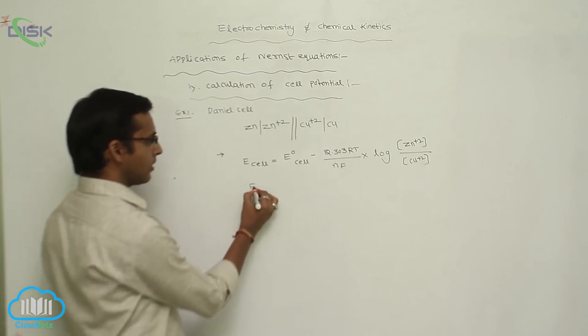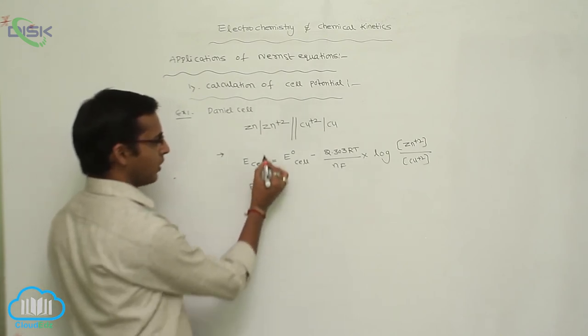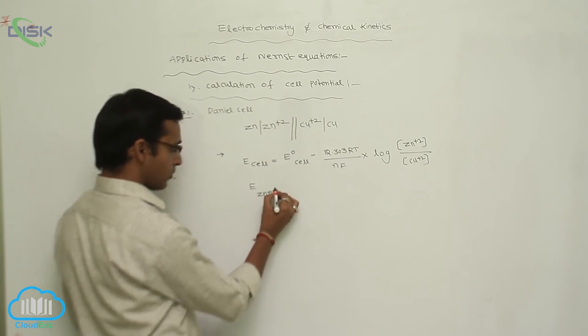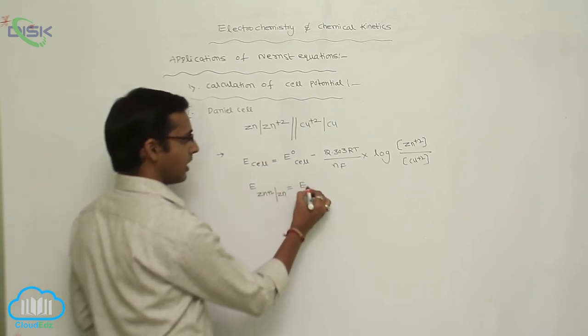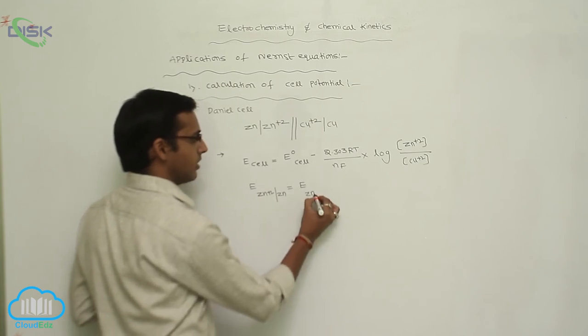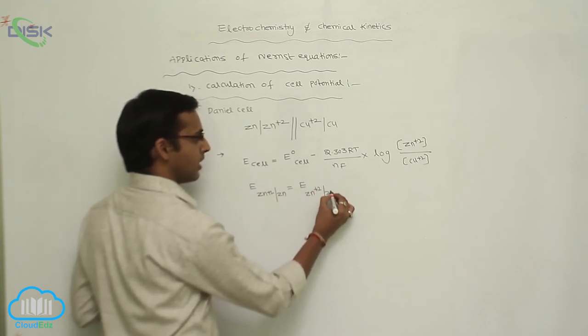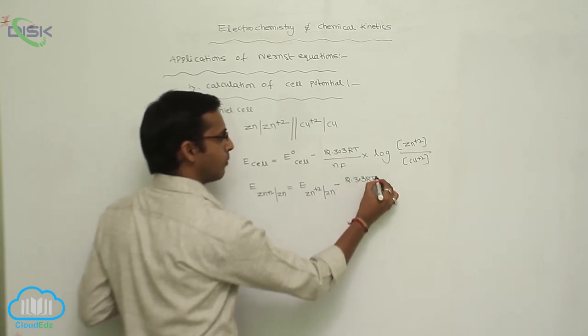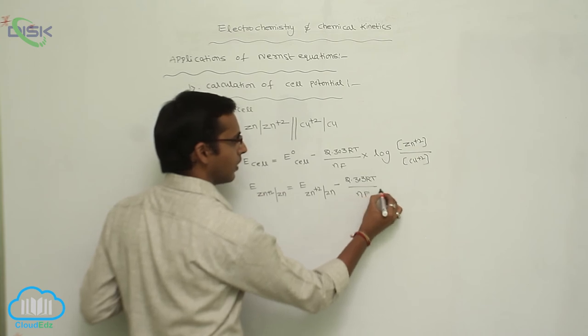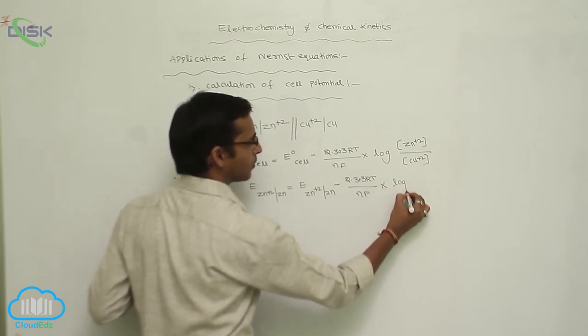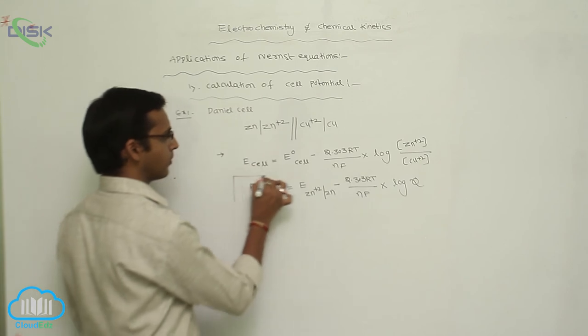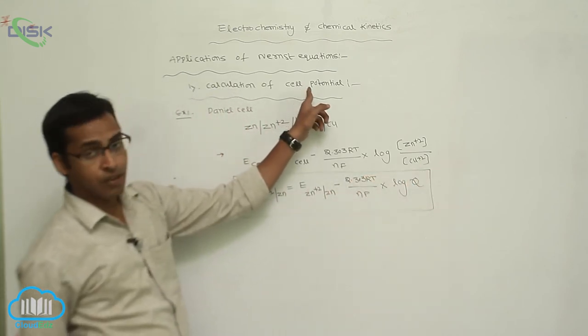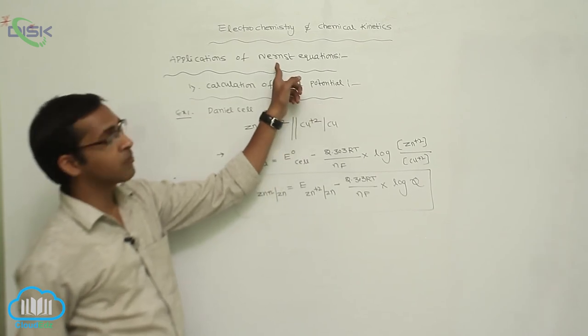Now E cell reduction potential value for Zn, Zn plus 2 with Zn, equals E naught cell Zn plus 2 by Zn minus 2.303 RT by NF into log Q. So this is your equation for calculation of cell potential with help of Nernst equation.